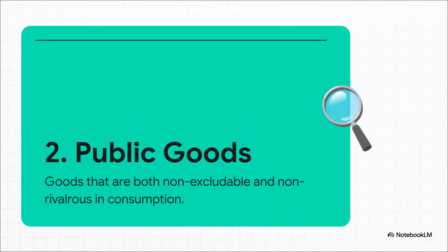Glitch number two is the problem of public goods. These are things with two very specific properties that just mess with the market. First, they're non-excludable, meaning you can't stop anyone from using them. And second, they're non-rivalrous, which means one person using it doesn't stop another person from using it. This combination is a real puzzle for a profit-driven market.